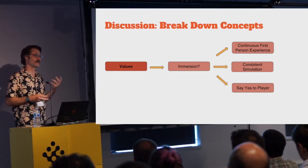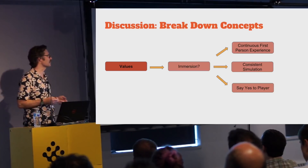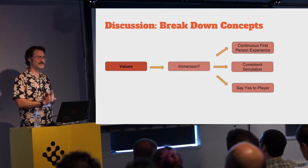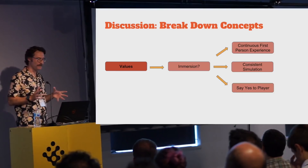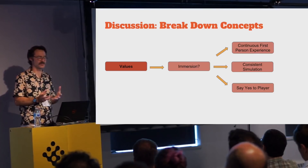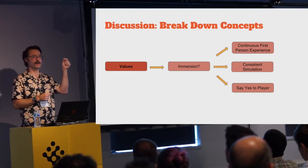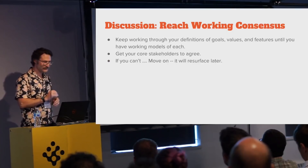On Bioshock 2 we had a core design value of 'immersion' — a super slippery concept that means a million things to different people. Over time we broke it down into three concrete things: a continuous first-person experience we'd never break away from; a consistent simulation that followed the same consistent rules; and 'say yes to the player' — expectation-based design from Bioshock 1, meaning if you expect something to happen in the game, you should try to support it. Those things recombined into our localized concept of immersion.